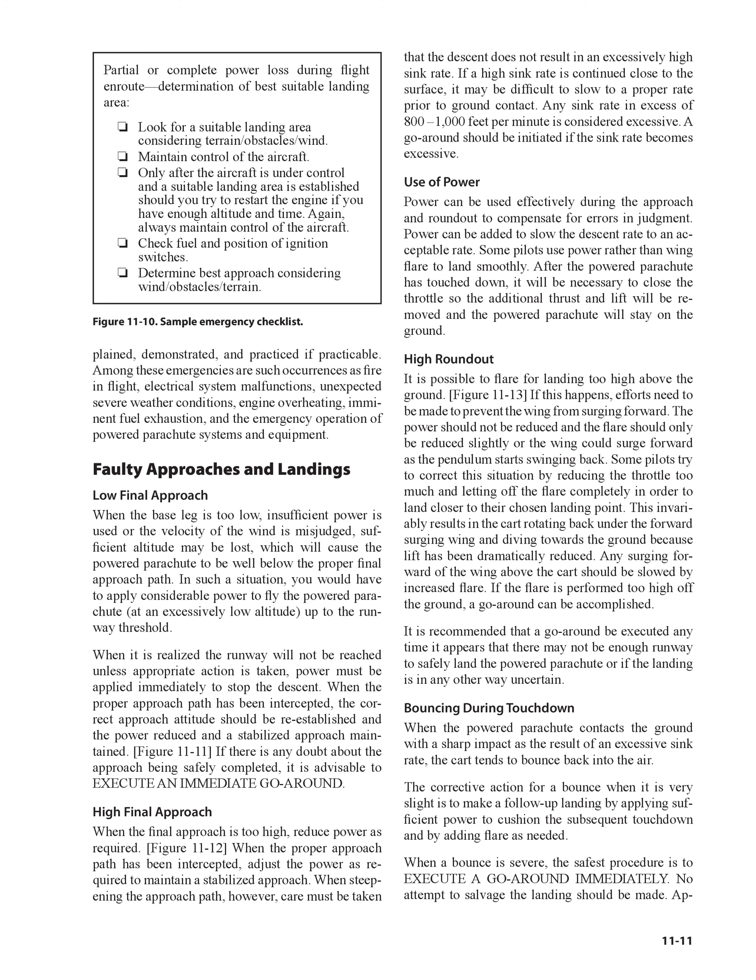Use of Power: Power can be used effectively during the approach and roundout to compensate for errors in judgment. Power can be added to slow the descent rate to an acceptable rate. Some pilots use power rather than wing flare to land smoothly. After the powered parachute has touched down, it will be necessary to close the throttle so the additional thrust and lift will be removed and the powered parachute will stay on the ground.